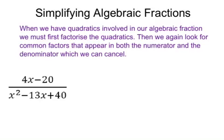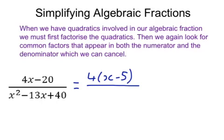Our first example is 4x minus 20 all over x squared minus 13x plus 40. The first thing we need to do is factorise everything in that expression. Factorising the top: 4 goes into both 4x and minus 20, so we get 4(x minus 5) on the top. On the bottom, we have to factorise the quadratic x squared minus 13x plus 40.